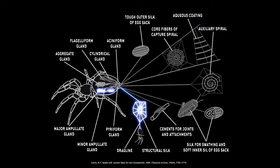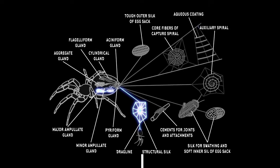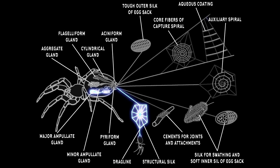Dragline silk comes from the major ampullate gland. As the name suggests, this silk provides safety lines that the spider drags while walking to save itself from a fall. This silk also provides the radial frame for the webs that give orb-weavers their name.